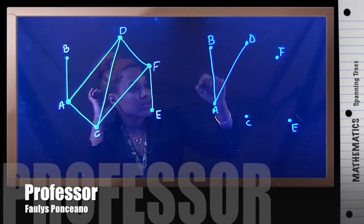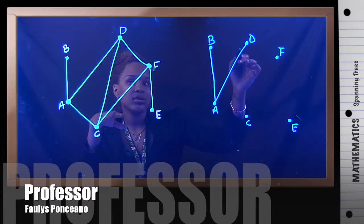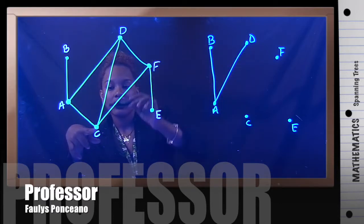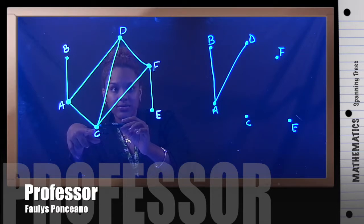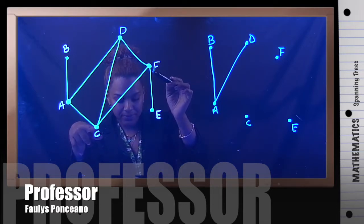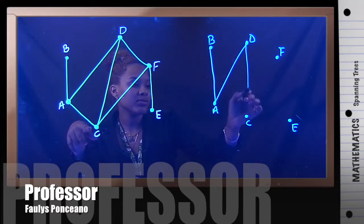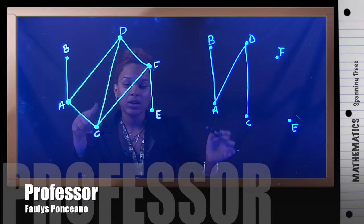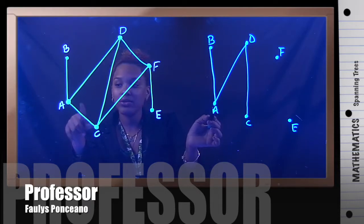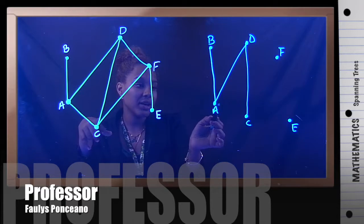So from D, I have an option. Do I go to C or do I go to F? If I go here. Now notice, I have to get rid of A to C. Because if I leave this here,